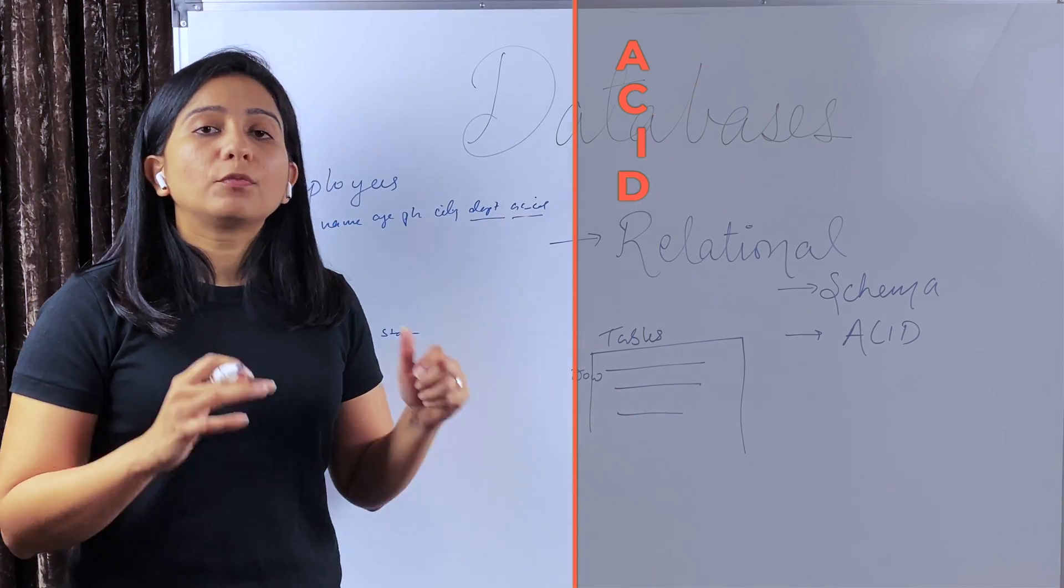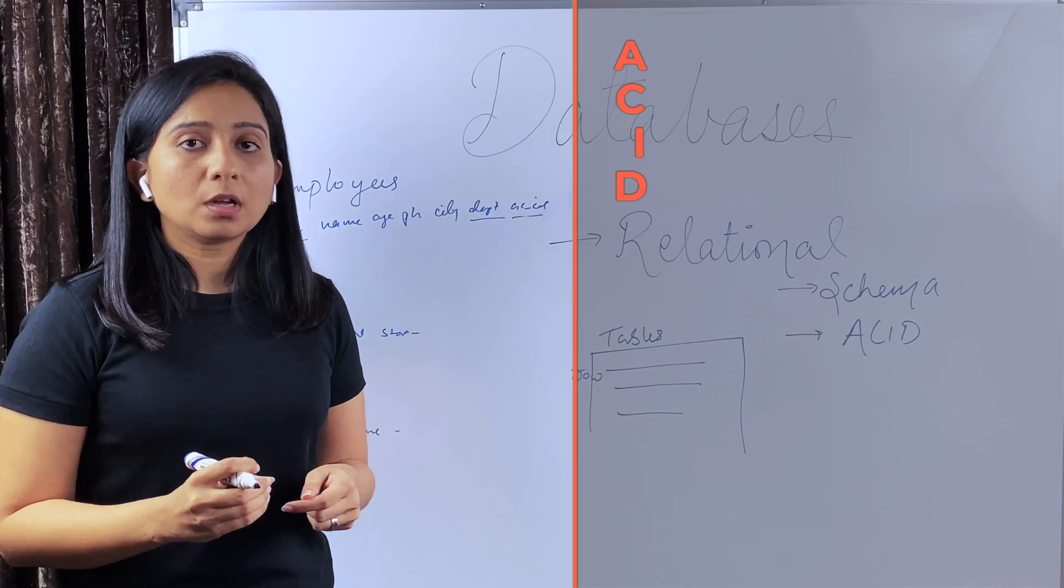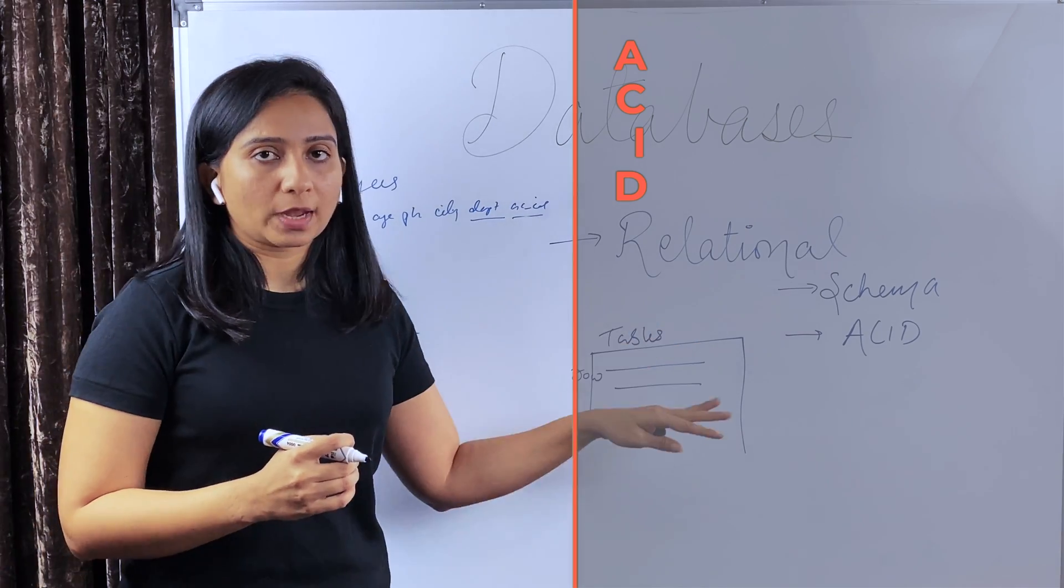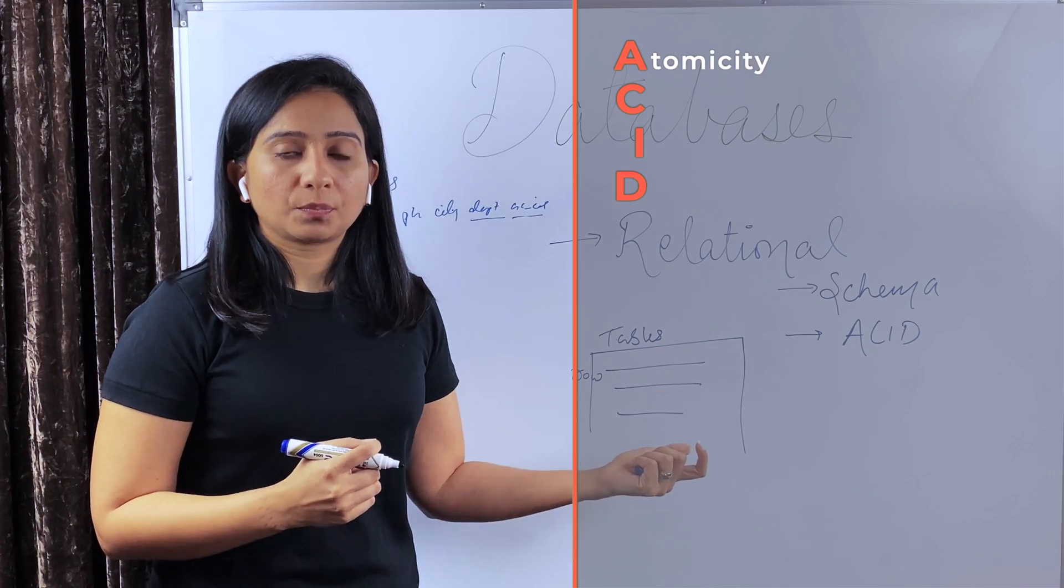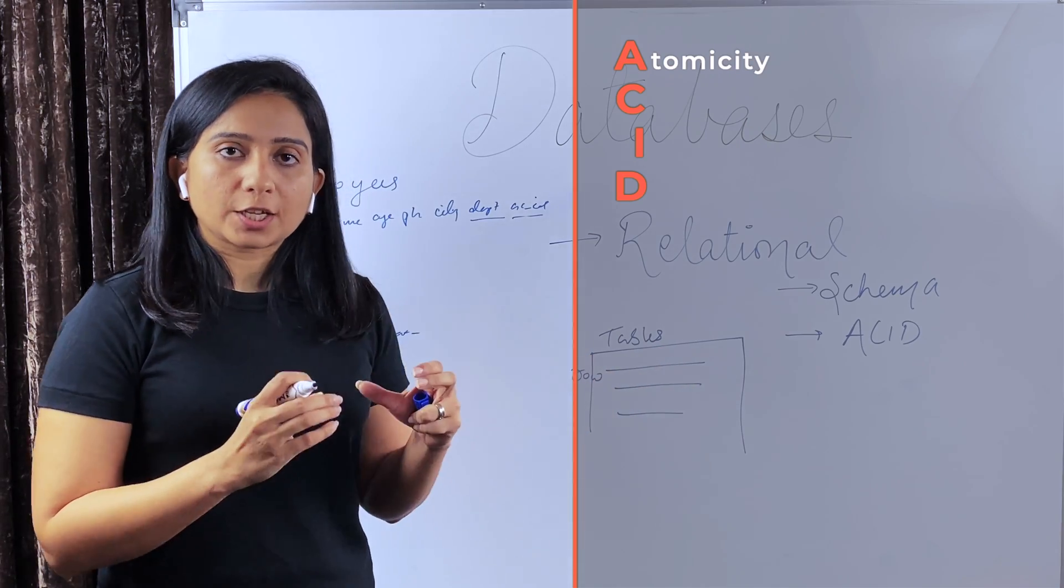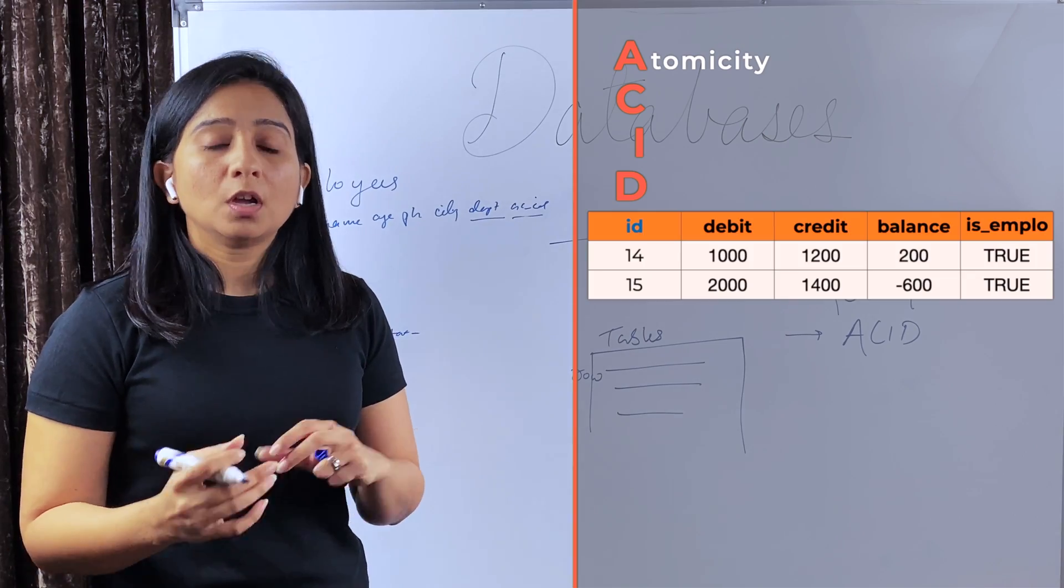Talking about ACID properties. If you don't know what are ACID properties, I have included a link in the description, but still I'll cover basics of ACID properties. So A in ACID properties stands for atomicity. Atomicity means a transaction in a database either happens completely or doesn't happen at all.